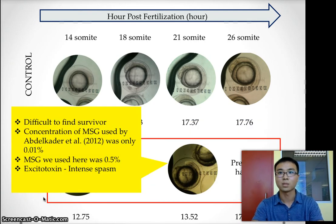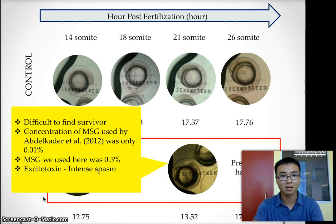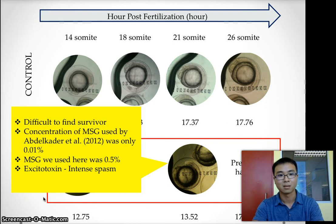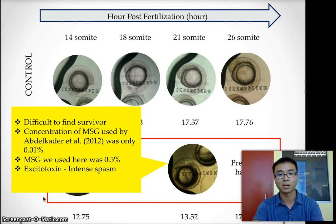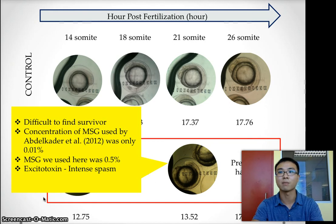At the stage of 21 somites, it was difficult to find surviving embryos because the highest concentration of MSG used by Abdul Khader et al. was only 0.01%, whereas the MSG we used here was 0.5% — approximately 50 times higher. Therefore, not many embryos survived until the end.